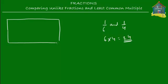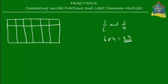Here is the lasagna with 24 pieces. We cut it into six pieces vertically — one, two, three, four, five, six — and then lengthwise into four long pieces — one, two, three, four. Now let's convert the fractions one-sixth and one-fourth to like fractions.